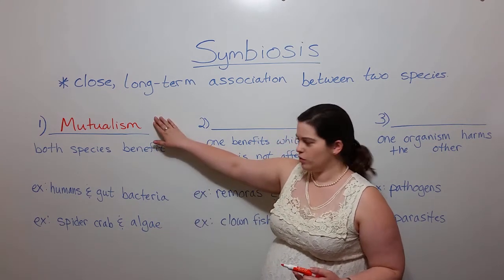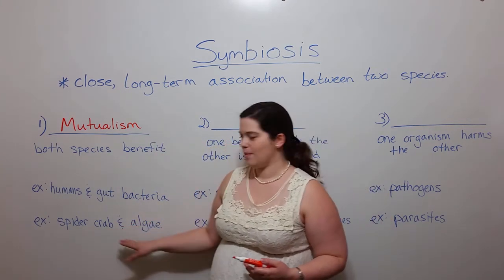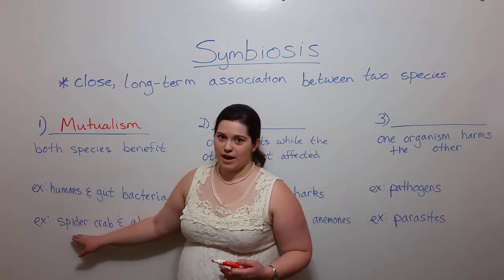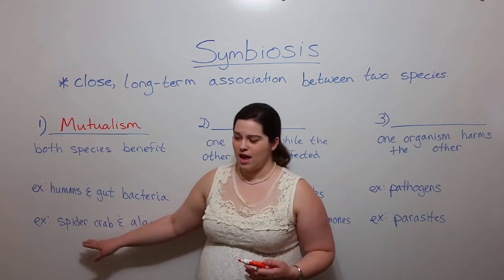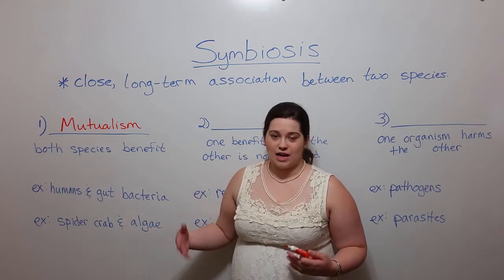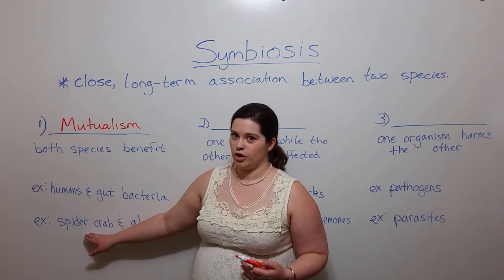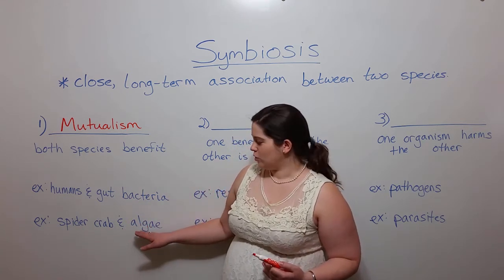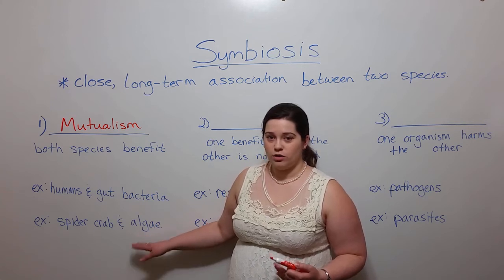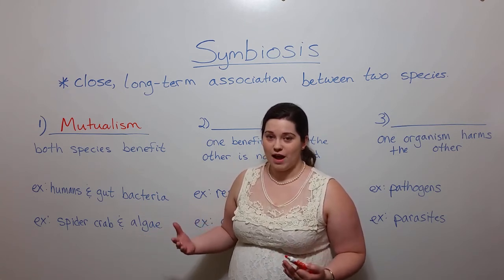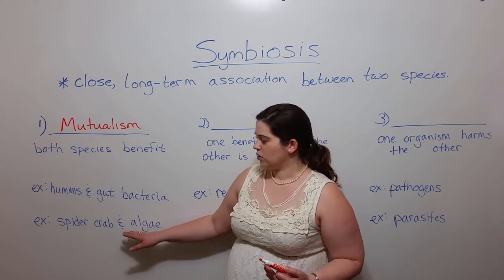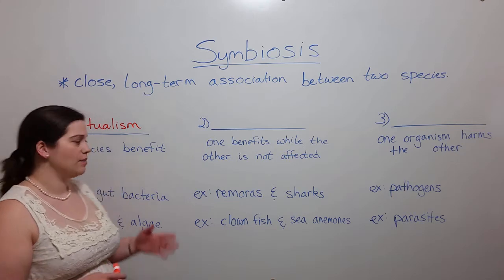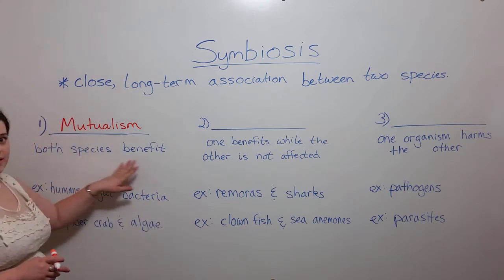Another example of mutualism is the spider crab and algae. Algae will grow on the spider crab host, meaning that the algae gain a place to live. The spider crab in turn benefits because this is a type of camouflage — it's able to blend in better with the ocean floor so that it blends into its environment and is therefore less likely to be recognized by potential predators. So those are examples of mutualism where both of the species benefit.